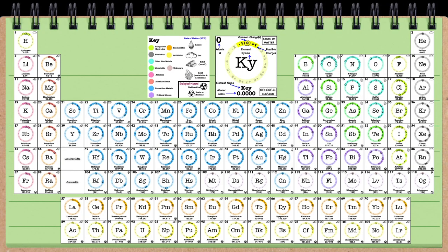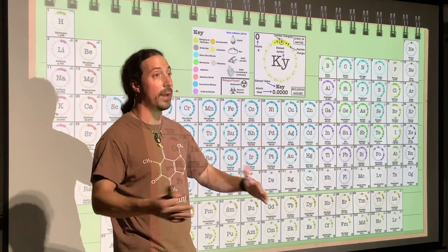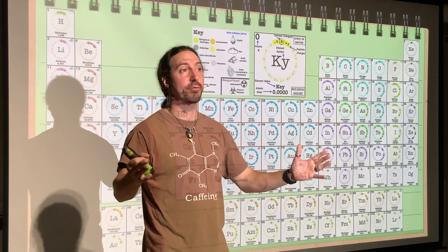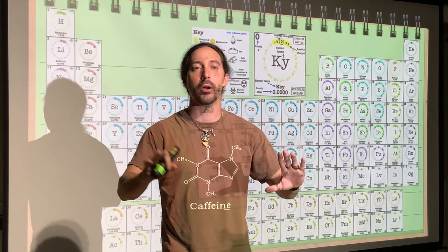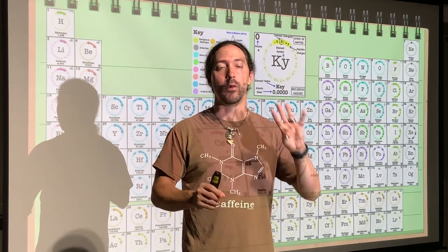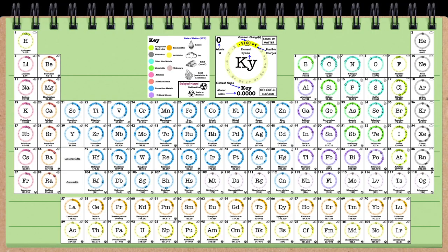And this might seem extremely daunting because there's 118 of them. And there's a ton of information that's present here. But remember, in biology, we only are really concerned with four of these elements.